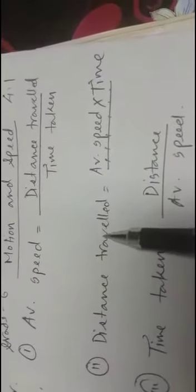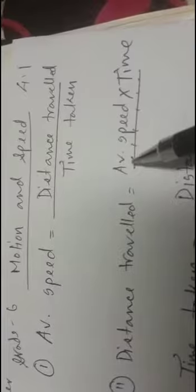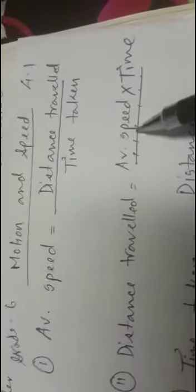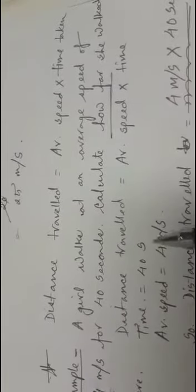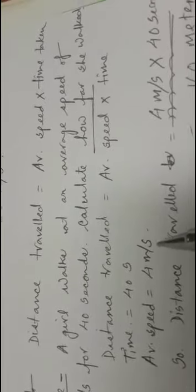And 40 seconds is the time. It is asking for how far she walked — how far means the distance. So we will use the formula: distance traveled equals average speed multiplied by time. The time she takes is 40 seconds and the average speed is 4 meters per second.